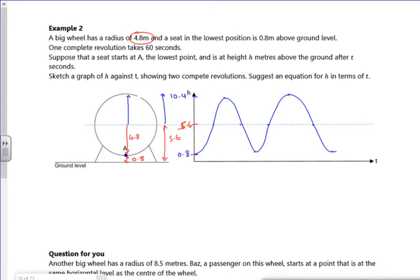Right. Phew. It takes 60 seconds for one complete revolution. So that's 60 there. That's going to be 120. That's going to be 30. That's going to be 90. So then we're 15 seconds out in between.